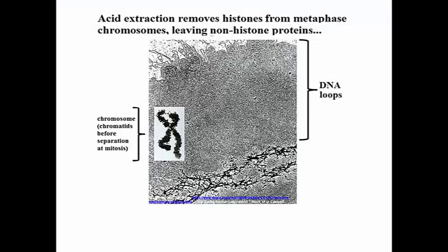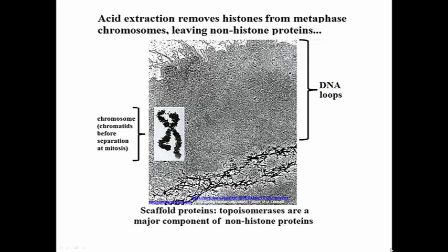This is actually an extract of chromatin showing the loops and some portion of the scaffold proteins at the center of these loops — those are DNA loops, the looped domains. Interestingly, the proteins in the scaffold are largely one kind of non-histone. Quantitatively, a major component turns out to be topoisomerases, suggesting there are topoisomerases in the scaffold in sufficient quantity to relieve supercoiling during replication of eukaryotic DNA during the cell cycle.